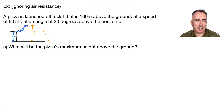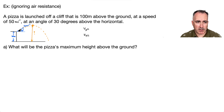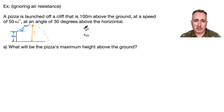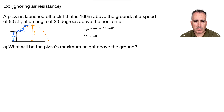Before we do anything else, let's calculate Vx and Vy. Since we have the speed at 50, Vx is V cosine theta and Vy is V sine theta. So Vx = 50 times cosine of 30 degrees, and Vy = 50 times sine of 30 degrees. Make sure your calculator is in degree mode, not radians.